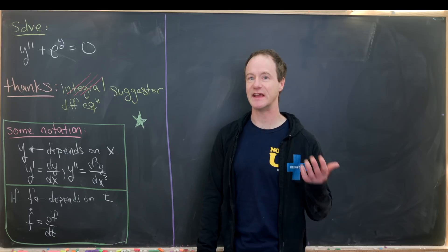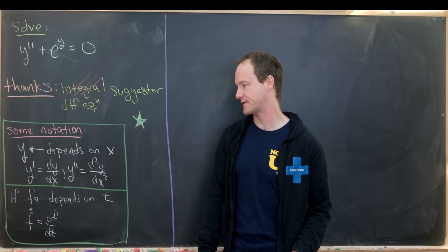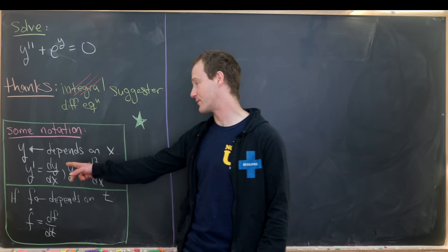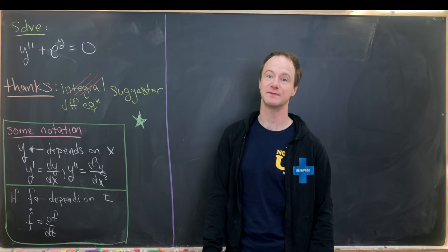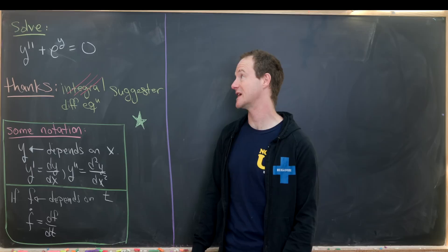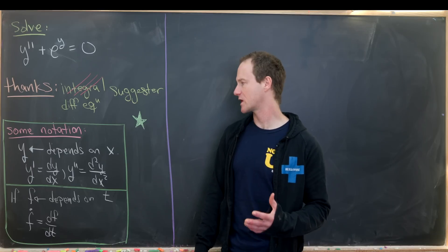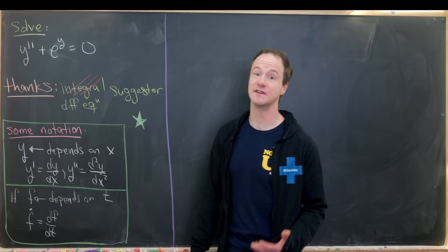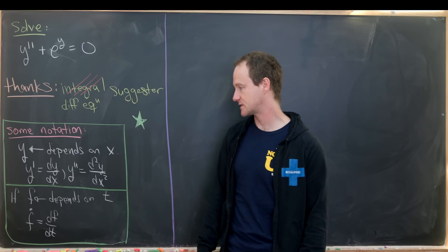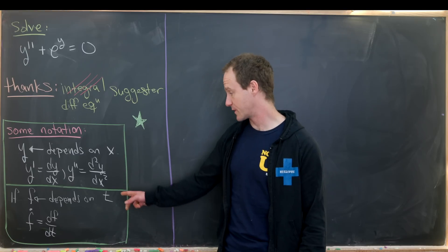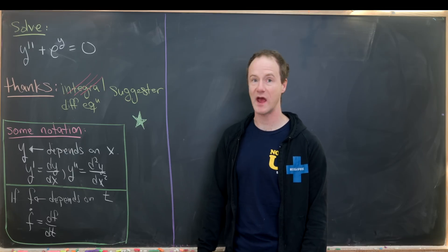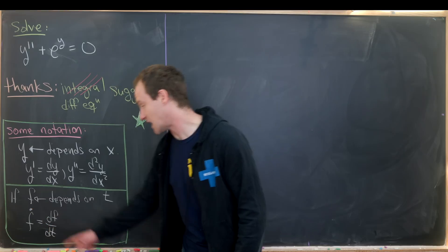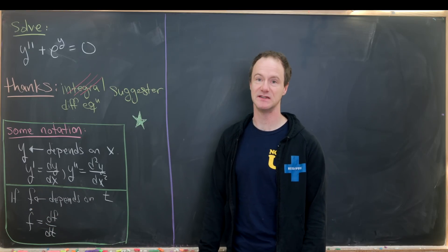Before we get started, I'd like to introduce some notation. We mean by y prime the derivative with respect to the root variable x, so we're considering y to be a function of x. And y double prime is the second derivative with respect to x. If we have a function with respect to t, which we will via a substitution, then we'll write f dot to be the derivative of f with respect to t.